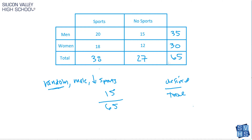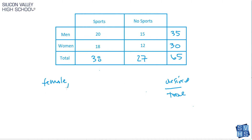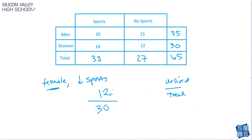Here's a second scenario. They might say: given that it's a female, what's the probability that she does not play sports? This one's tricky — the denominator is not 65. They're very specific about the pool of people we're pulling from. Given that it's a female, how many women are there total? There's 30. We're not pulling from the men category — they already said she's a woman, so 30. How many don't play sports? That's our 12 value. So this would be 12 out of 30.